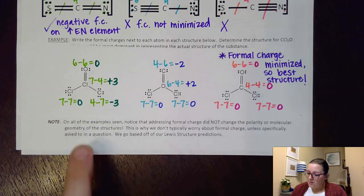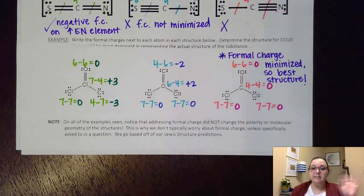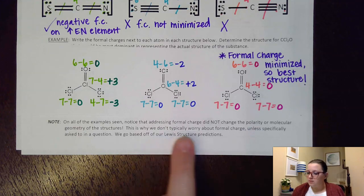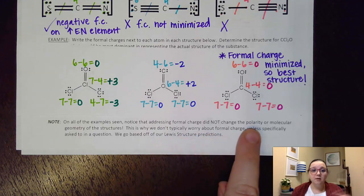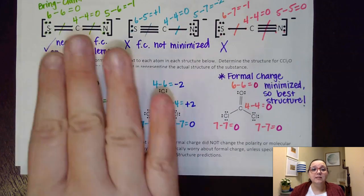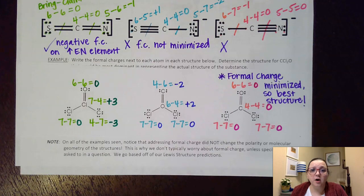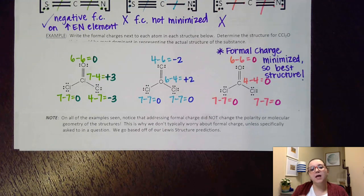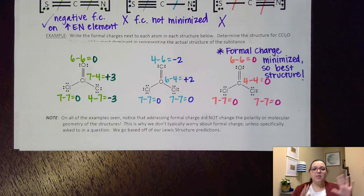Notice that even though all three CCl₂O structures were organized differently, they all had the same general shape — trigonal planar — regardless of how the bonds were arranged. Addressing formal charge doesn't change the polarity or molecular geometry. We don't have to assign formal charge unless specifically asked, because we can still determine correct polarity and molecular geometry without it.